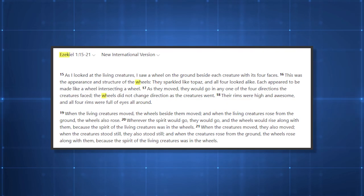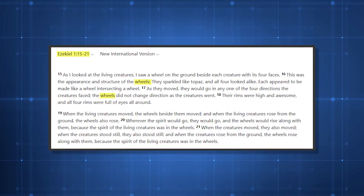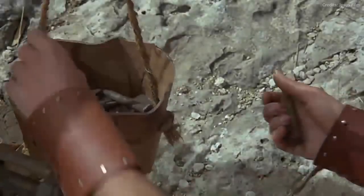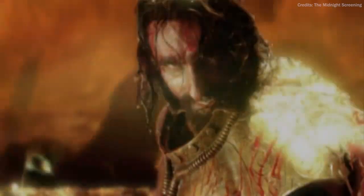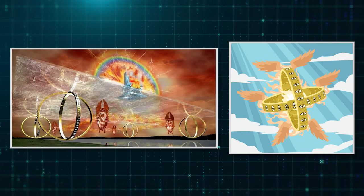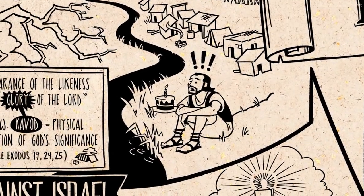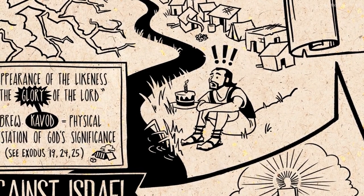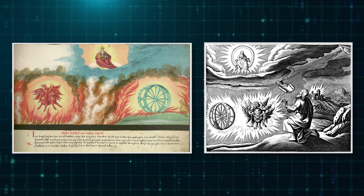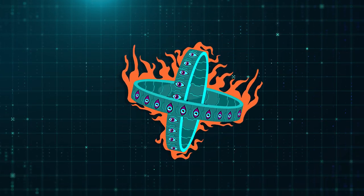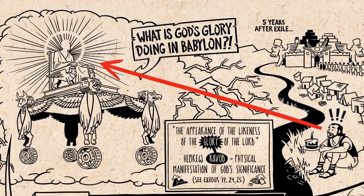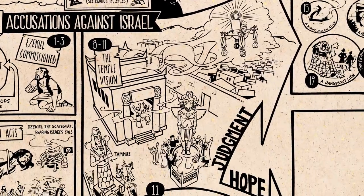The exact reference to Ezekiel's wheel appears in Ezekiel chapter 1, verses 15 to 21, which says: As I looked at the living creatures, I saw a wheel on the ground beside each creature with its four faces. This was the appearance and structure of the wheels. They sparkled like topaz, and all four looked alike. Each appeared to be made like a wheel intersecting a wheel. As they moved, they would go in any one of the four directions the creatures faced. The wheels did not change direction as the creatures went. Their rims were high and awesome, and all four rims were full of eyes all around.